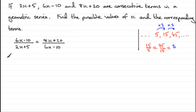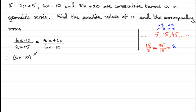Let's go about solving it then. We need to get rid of the 2x plus 5, which means we'd need to multiply both sides by 2x plus 5, and we'd need to cancel out the 6x minus 10, so we'd also multiply both sides by 6x minus 10. If we do that, we'll end up with (6x minus 10) times (6x minus 10) equals (2x plus 5) multiplied by (8x plus 20).